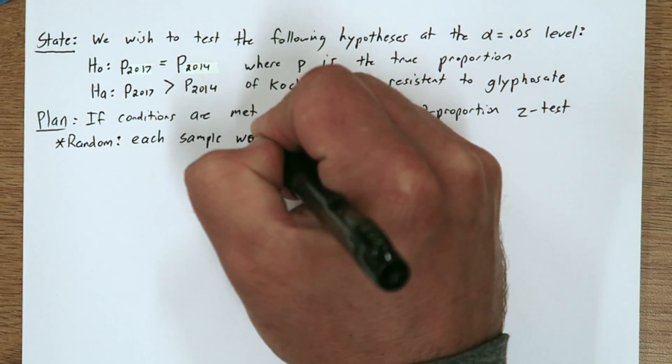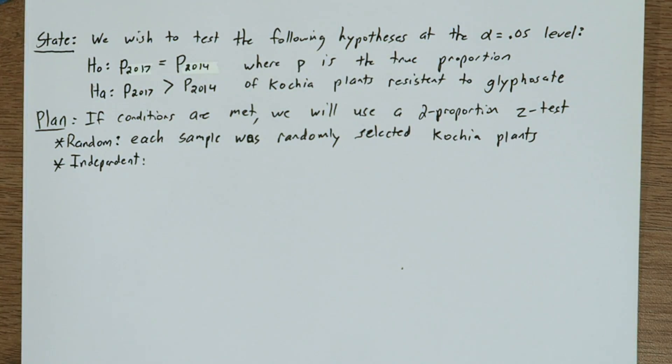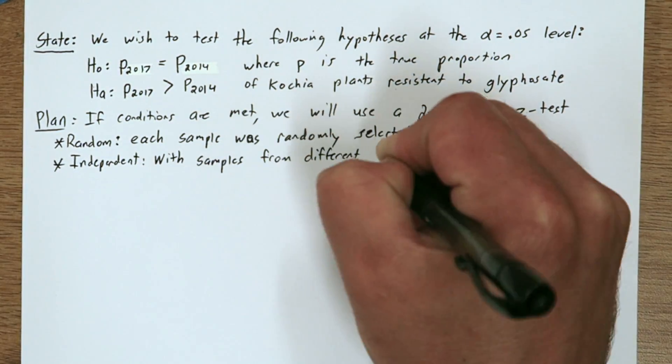Random condition: Each sample was randomly selected Cochia plants. Independent: With samples from different years, the samples are independent of each other.